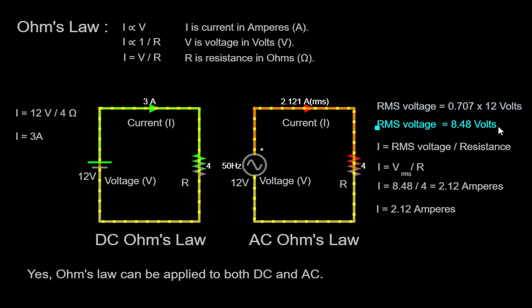Now, with the RMS voltage and the resistor's resistance, we can determine the current flowing through the AC circuit using Ohm's law: I = V / R = 8.48 volts / 4 ohms = 2.12 amperes. Hence, in this AC circuit, the current flowing through the resistor is approximately 2.12 amperes.